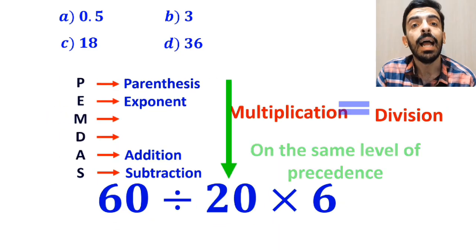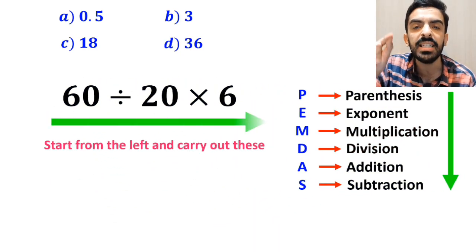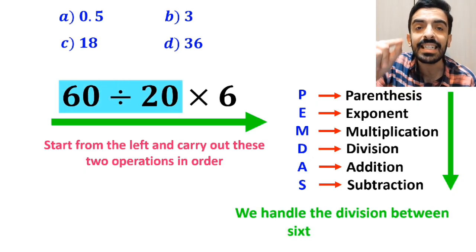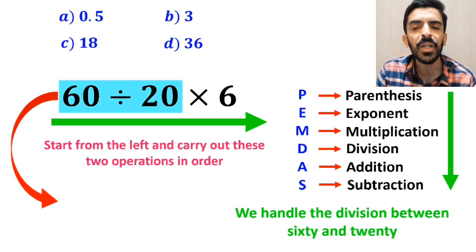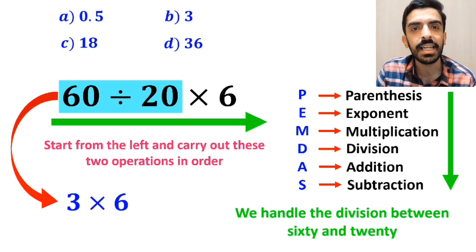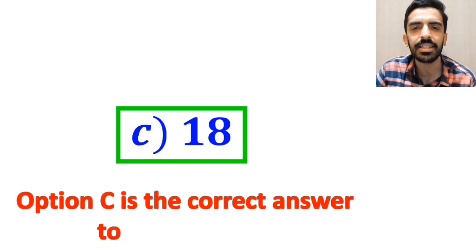In this case, the best thing to do is to start from the left and carry out these two operations in order. So first we handle the division between 60 and 20, which simplifies this expression to 3 times 6. And finally, the answer becomes 18. Therefore, option C is the correct answer to this question.